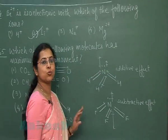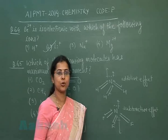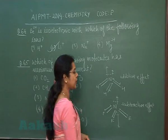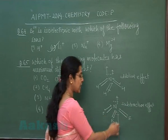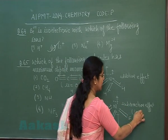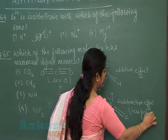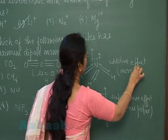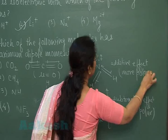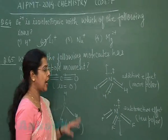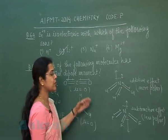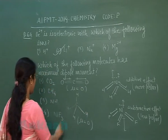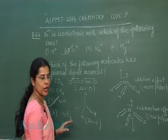Even though fluorine is more electronegative than hydrogen, due to the subtractive effect, NF₃ will be less polar. Ammonia will be more polar, and maximum dipole moment will be observed for NH₃. The correct option is the third one.